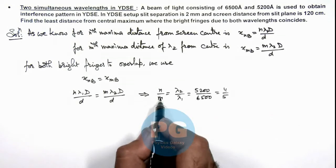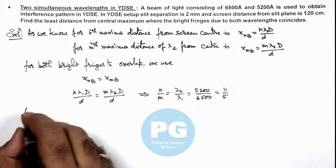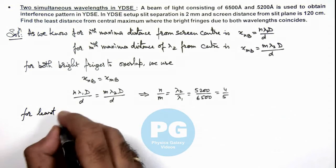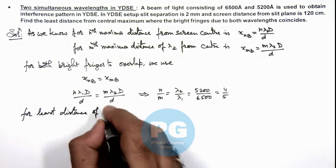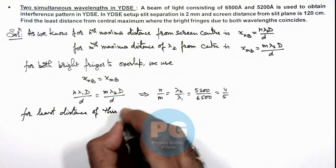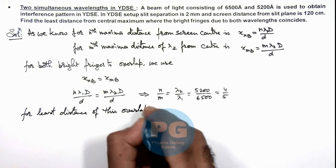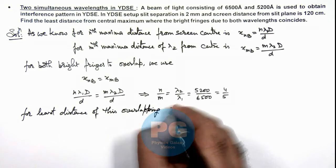Here n and m are integers so here we can say for least distance of this overlapping bright fringe.